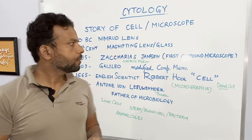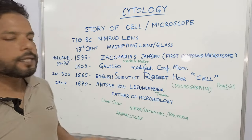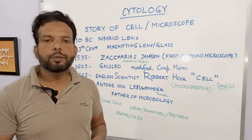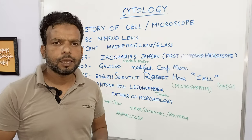Zacharias Janssen was at that time a teenager. It is thought that his father's first compound microscope was made in 1595.